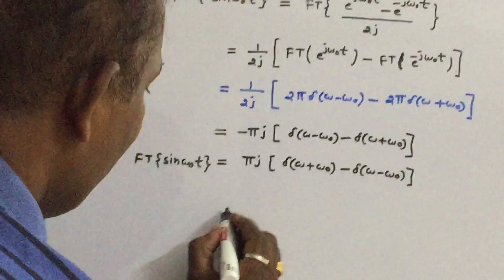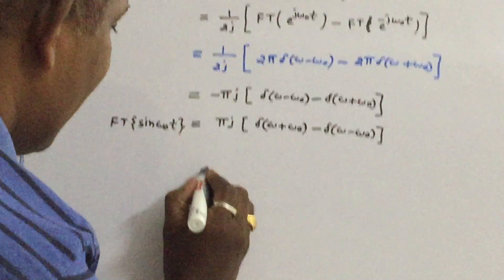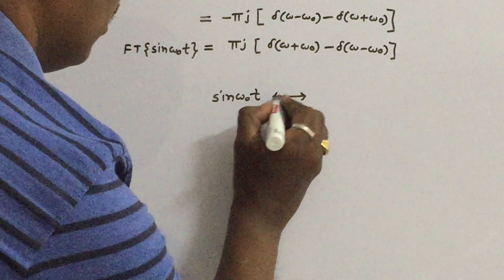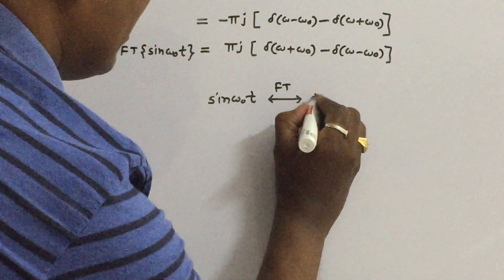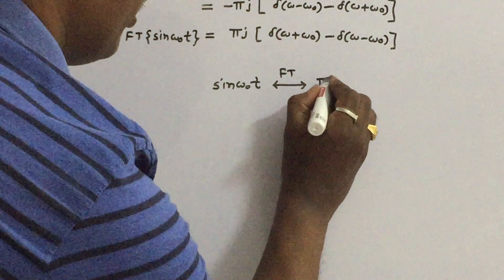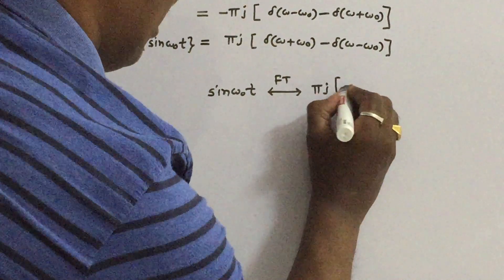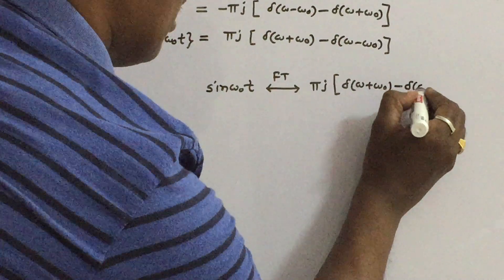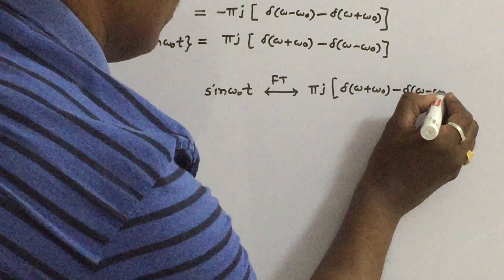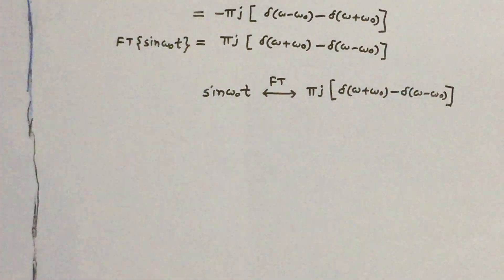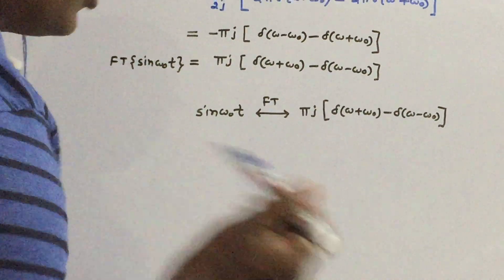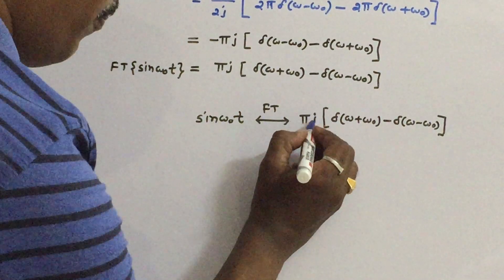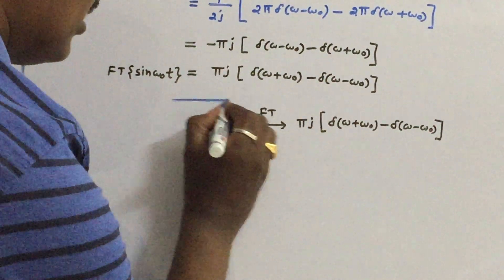You must remember this formula. The Fourier transform of sin(ω₀t) is πj·δ(ω+ω₀) − πj·δ(ω−ω₀). Compared to cos(ω₀t), the difference is that for cosine there is no j and the terms are added with a plus sign, whereas for sine you add j and use a minus sign.